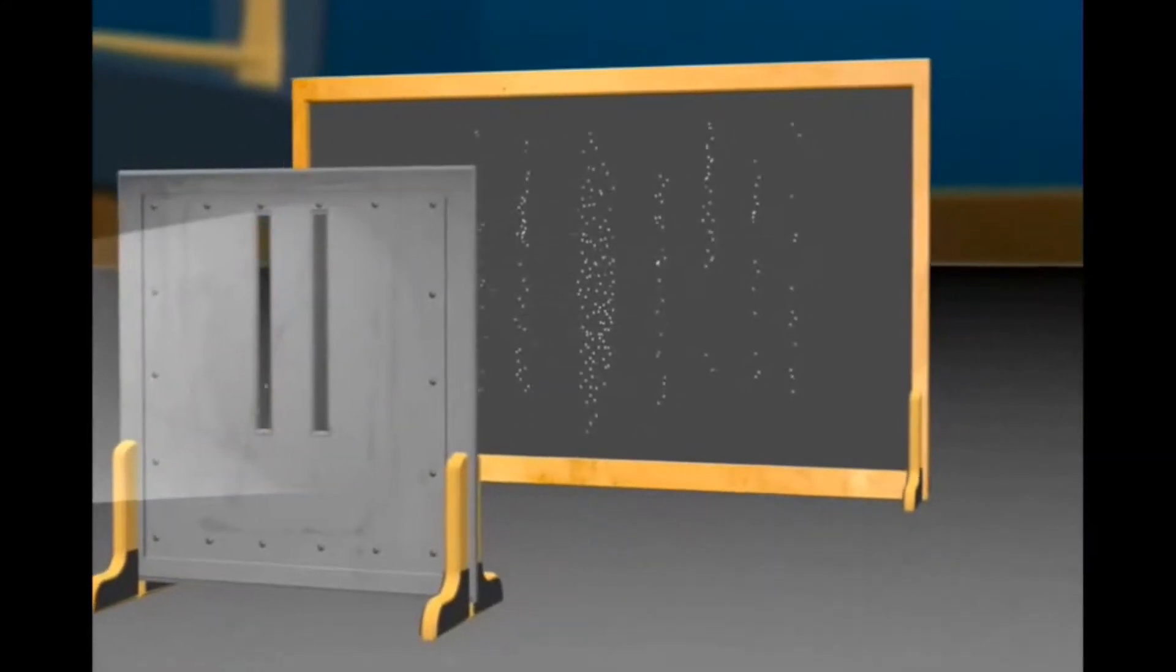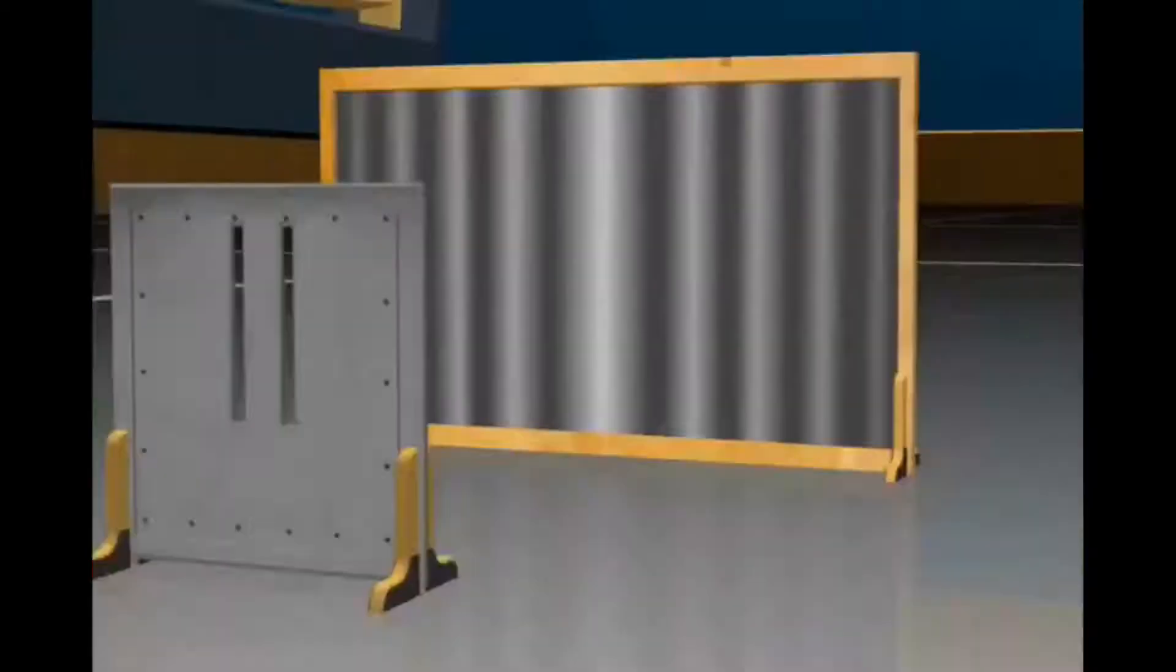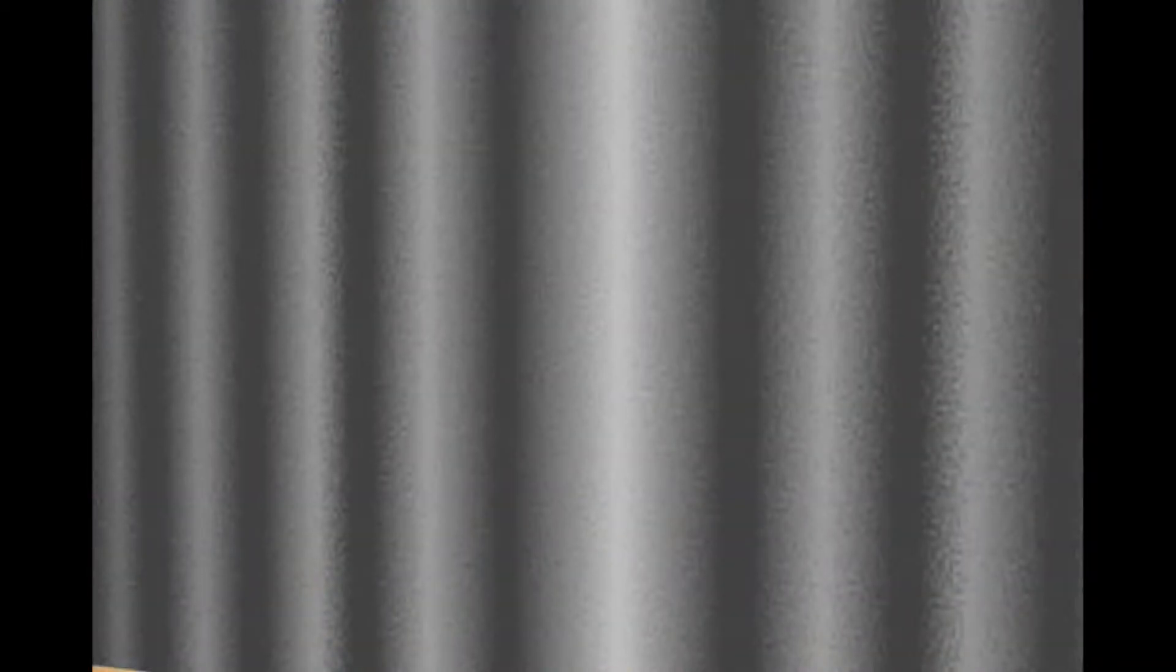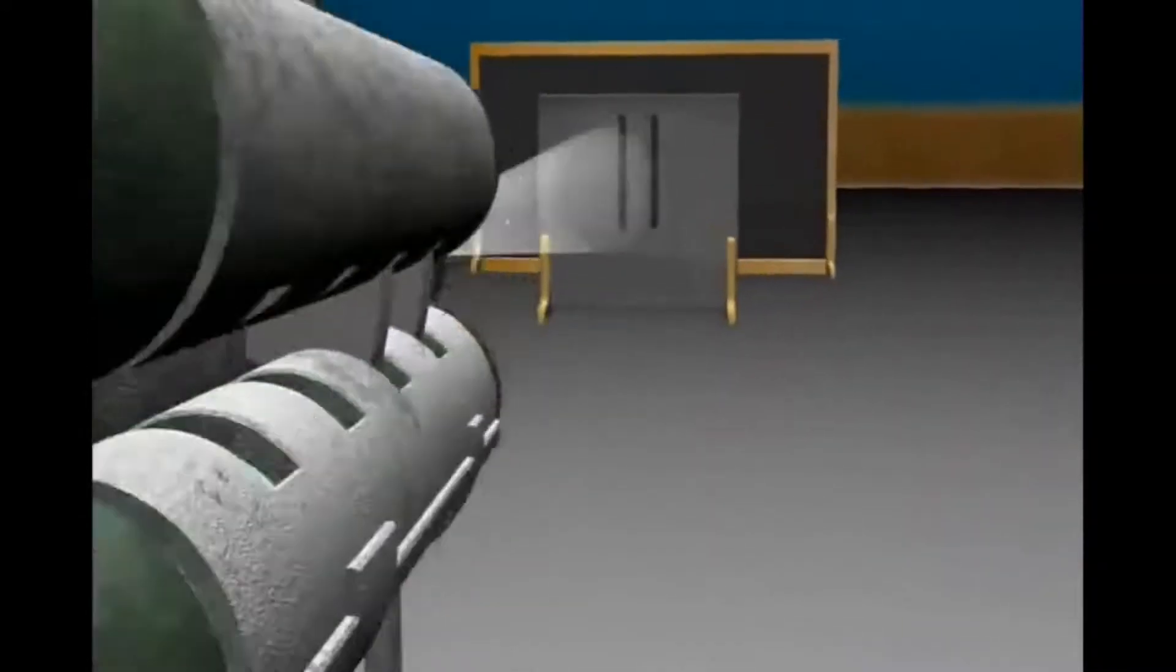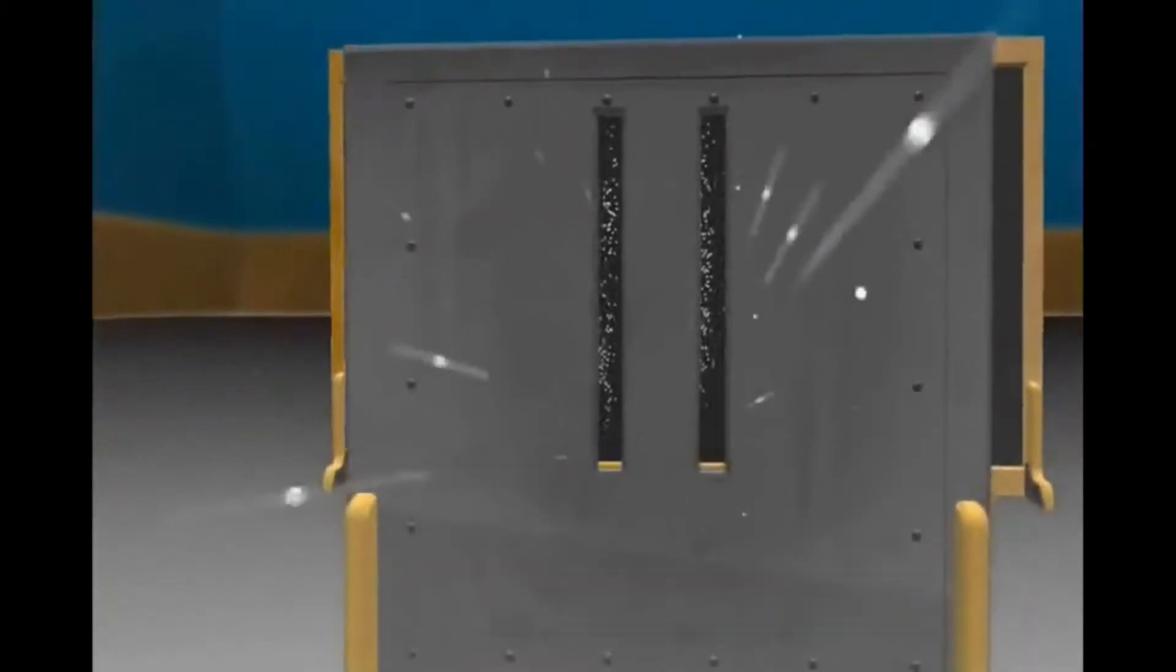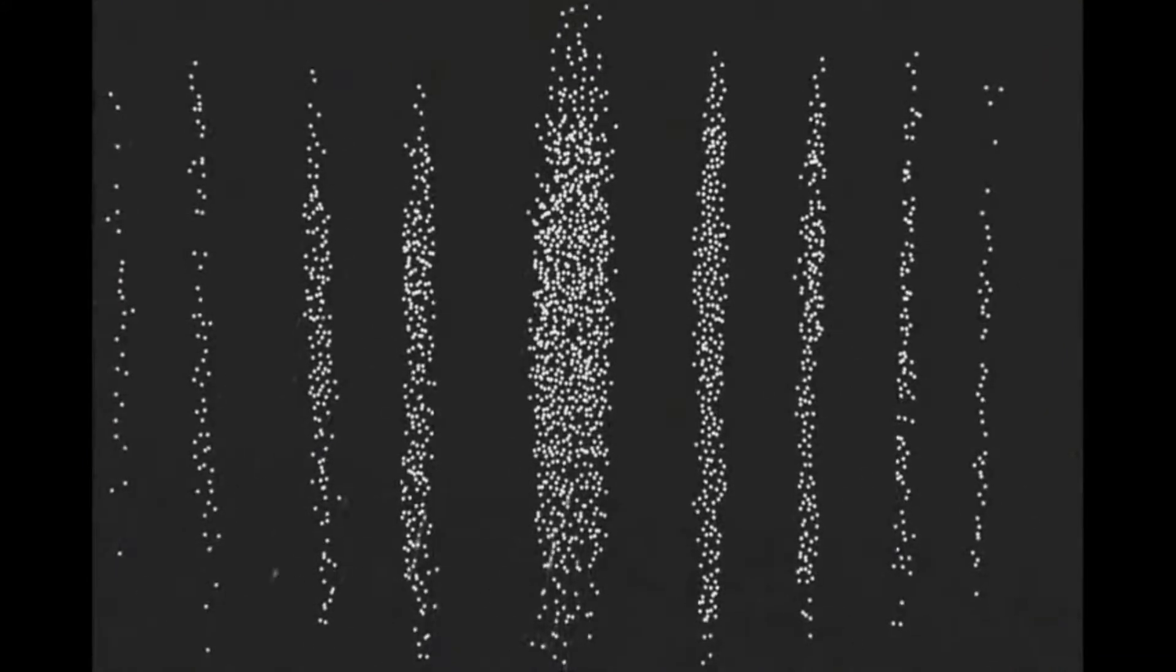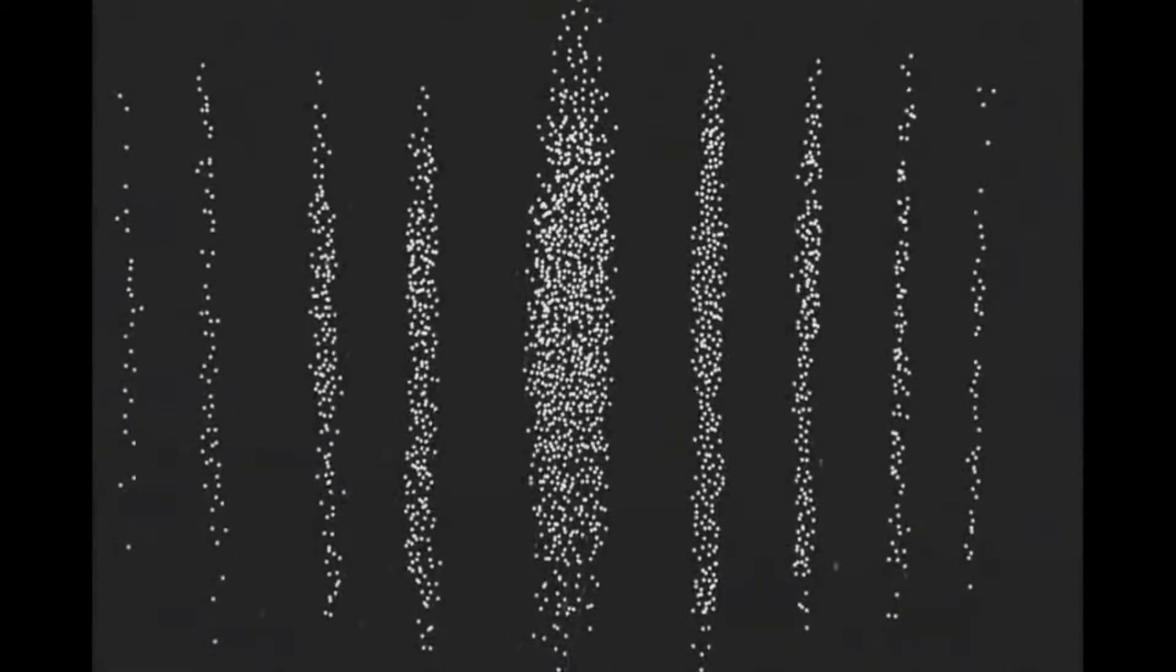So if we shoot these tiny bits through two slits, we should get, like the marbles, two bands. What? An interference pattern! We fired electrons, tiny bits of matter, through. We get a pattern like waves, not like little marbles.